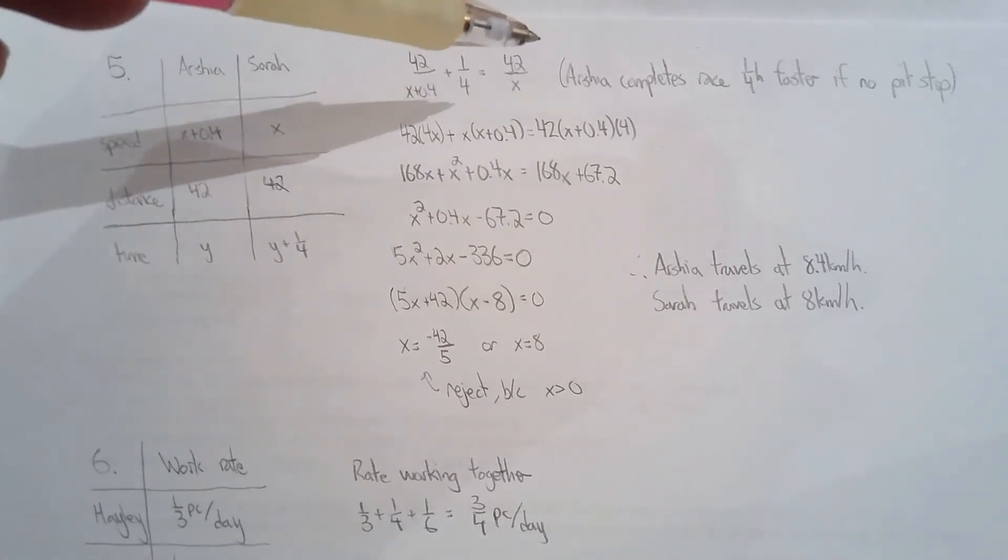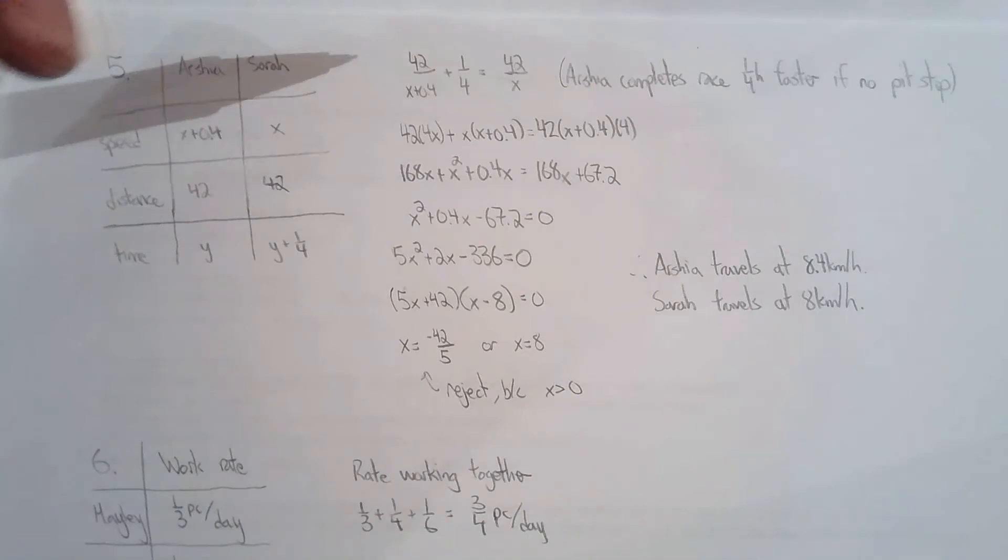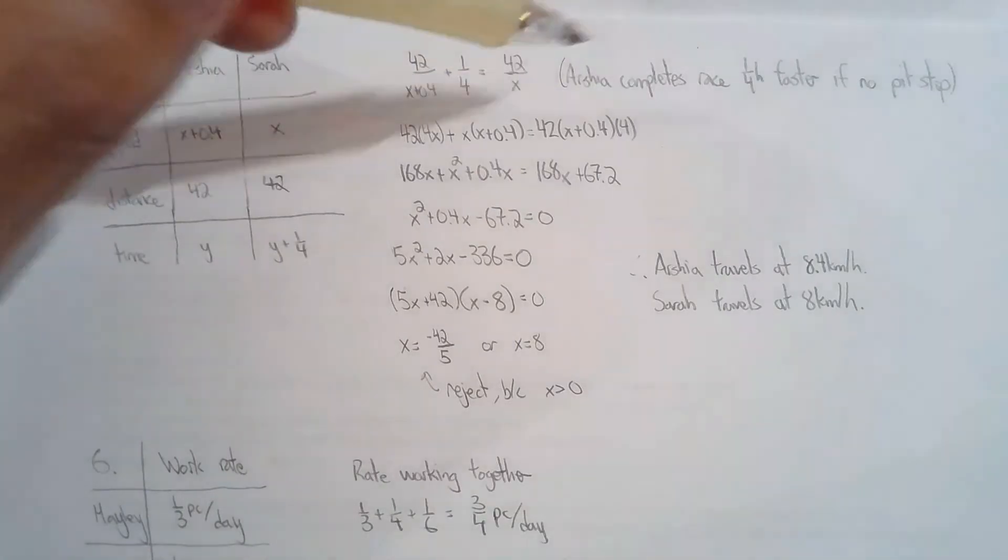Once I have the table I can build the equation because I know that Arshia completes the race a quarter hour faster if there were no accidents. In the word problem it says Arshia had some tire problems, some car problems, engine problems, so she actually lost the race even though she was going faster.